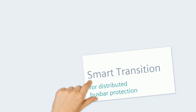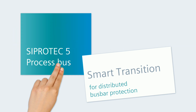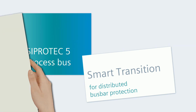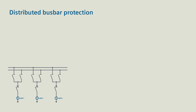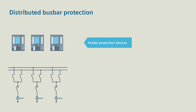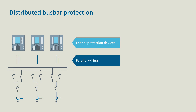Smart Transition for Distributed Bus Bar Protection. With the CProtek 5 Process Bus, it's quite easy. The initial situation is a double bus bar with several feeders. The CProtek 5 protection devices are directly wired to the transformers and are located in the relay room.